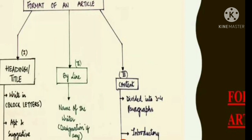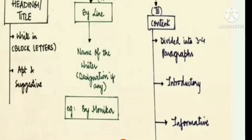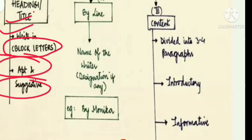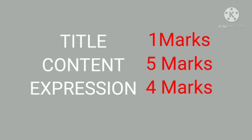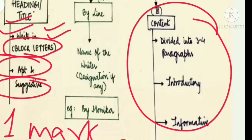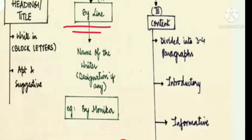Let's talk about all three individually. The heading should be written in block letters and it should be apt and suggestive. It should be related to the paragraphs you are going to write — related to the content. If there is a mismatch, the examiner will not give you marks for the title, which carries one mark.